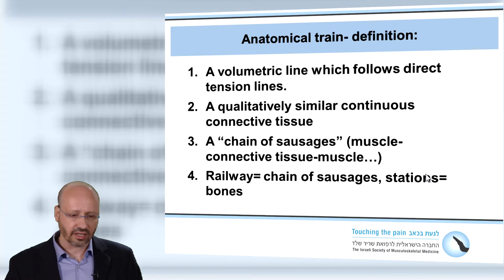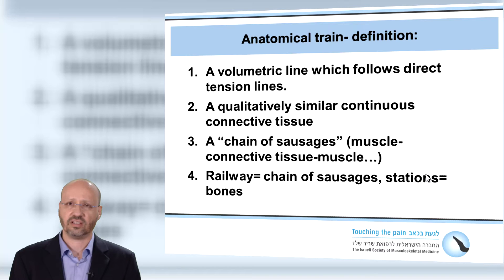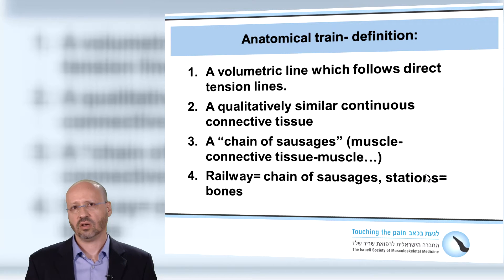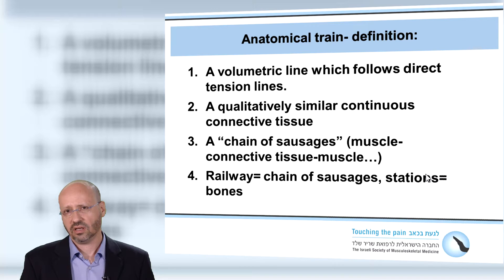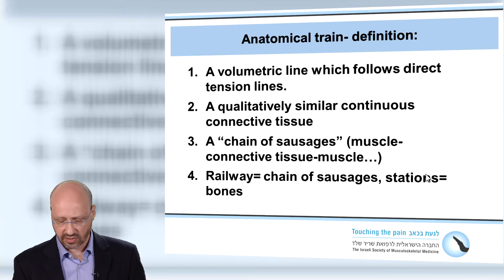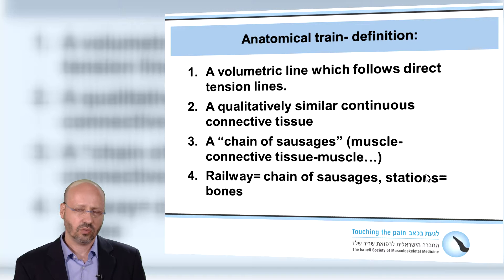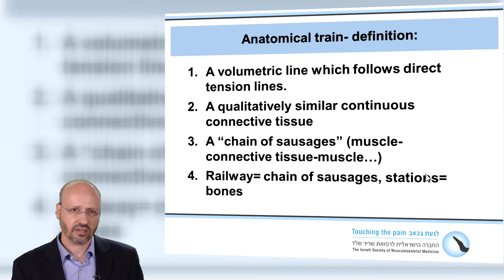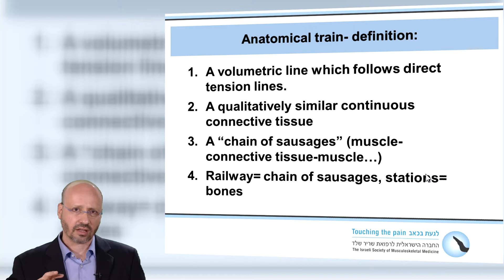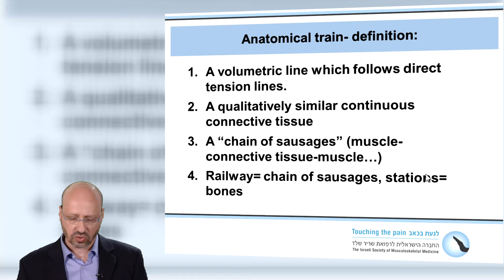This is a practical method for postural pattern diagnosis and also helps explain how pain points can be found remotely from the pain source. An anatomical train is a volumetric line which follows direct tension lines — a qualitatively similar continuous connective tissue along the train. Basically, this is a chain of muscles connected with connective tissue between them. It's like a chain of sausages — not the way we learned it in med school with origin, insertion, and muscle. We now look at muscles in a train: one muscle connected to the other.